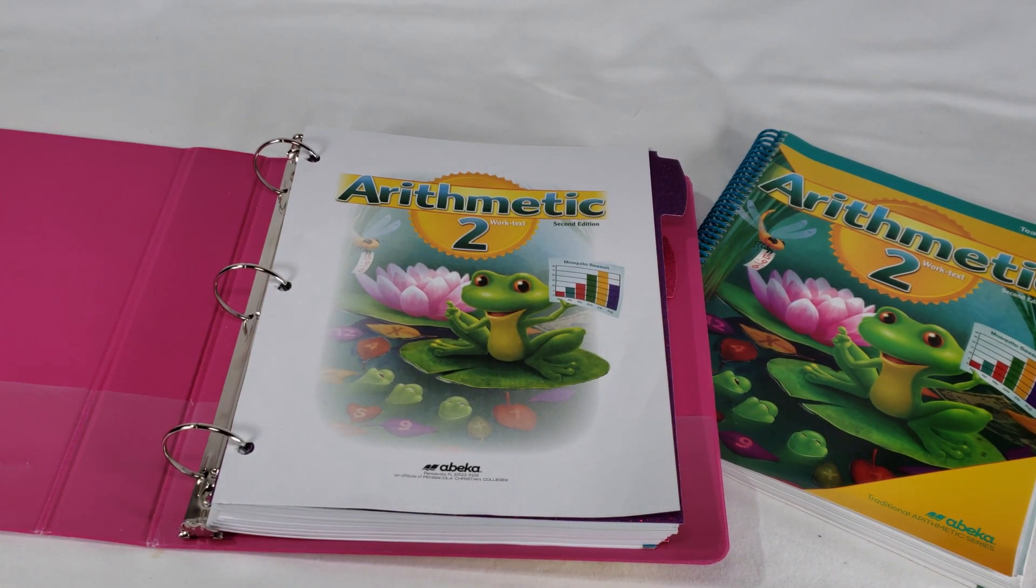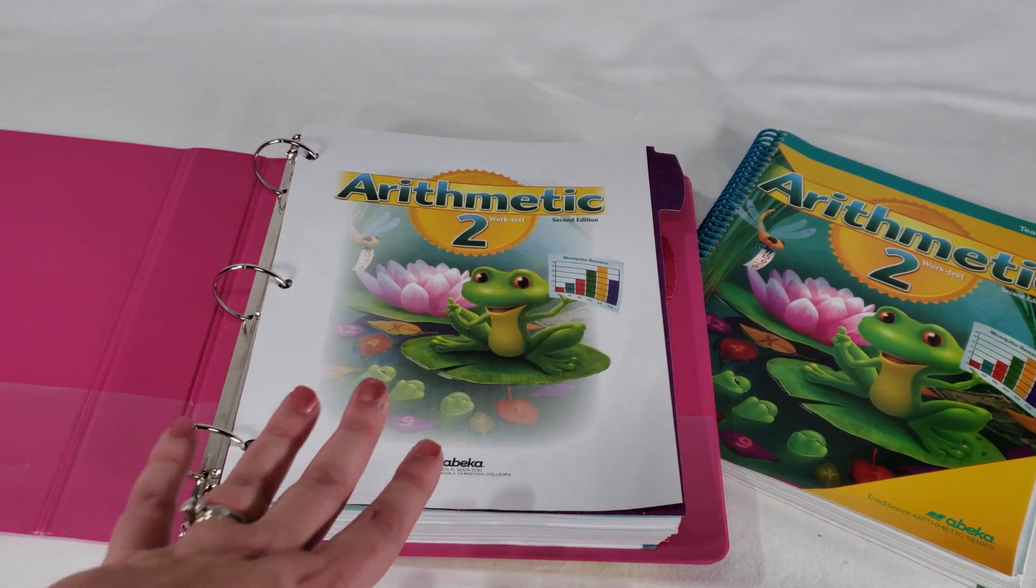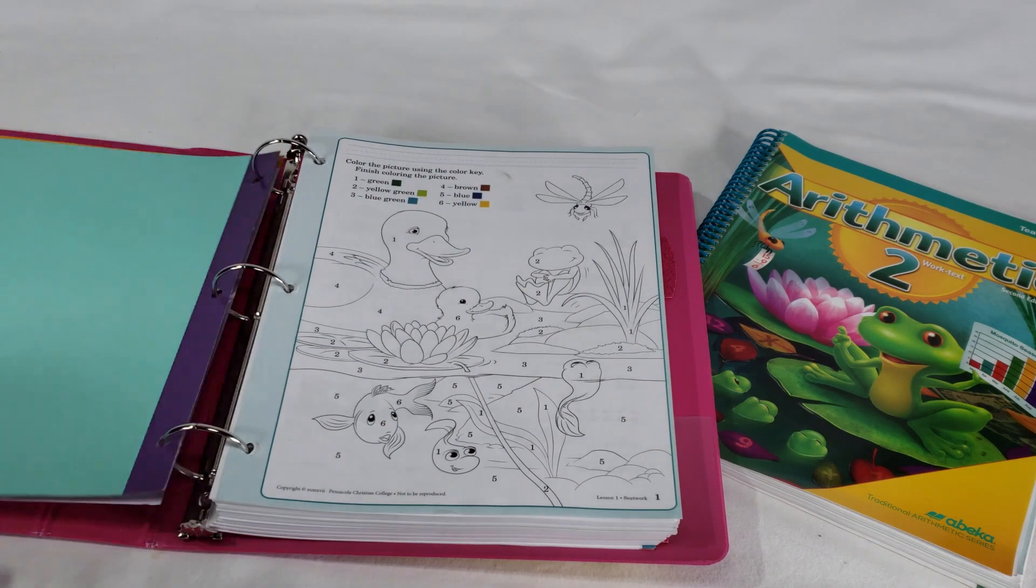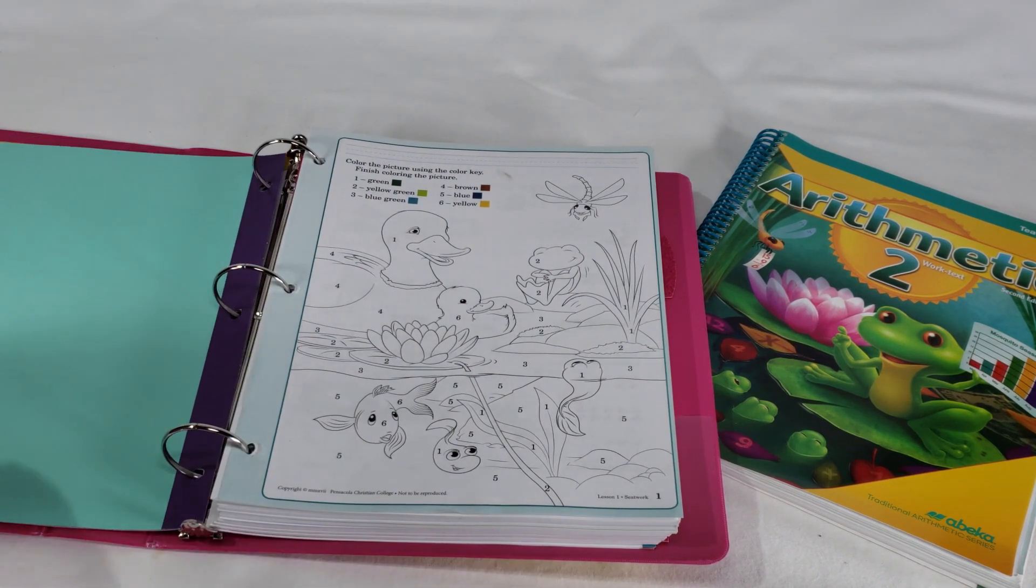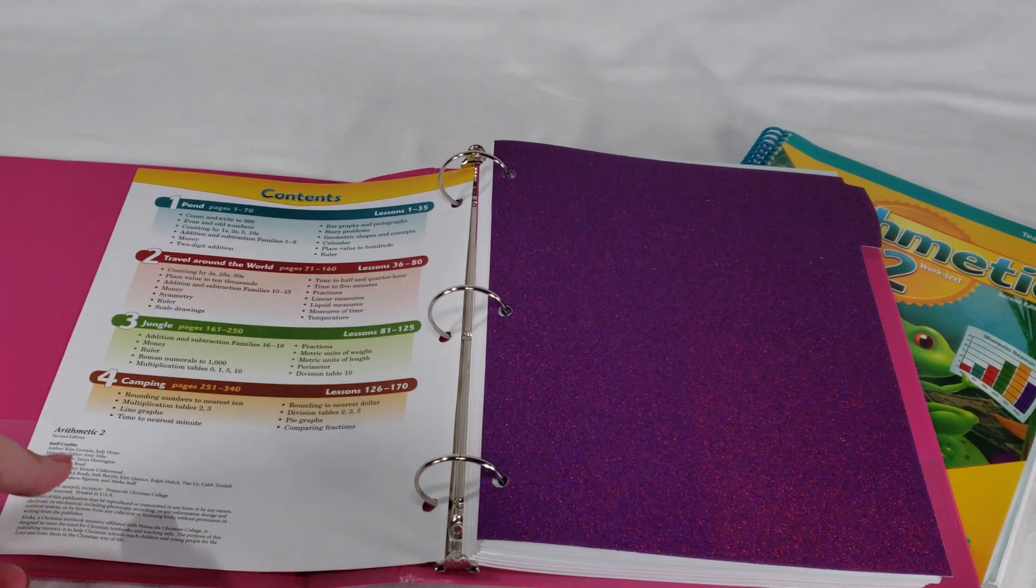You still get all the workbook pages and all of that, but it's just unbound. Part of the reason why we did that - and it's not more money, it's the same price either way - is because one of the things with Horizons is we found we ended up having to rip out the pages quite frequently. This way it's still connected, it still has its place, but it's a lot easier to remove the page if we need to.